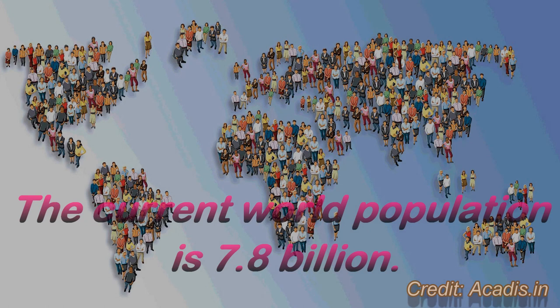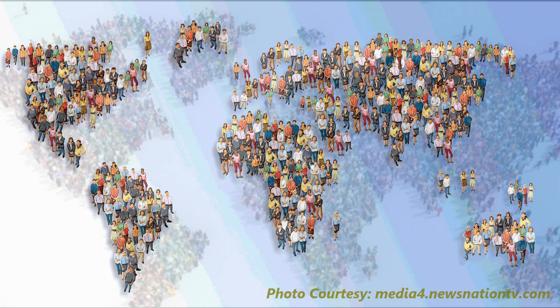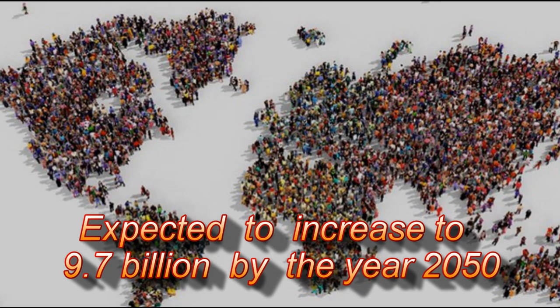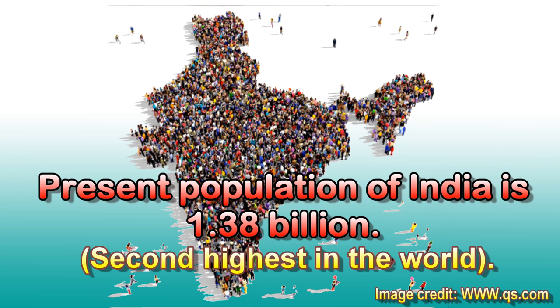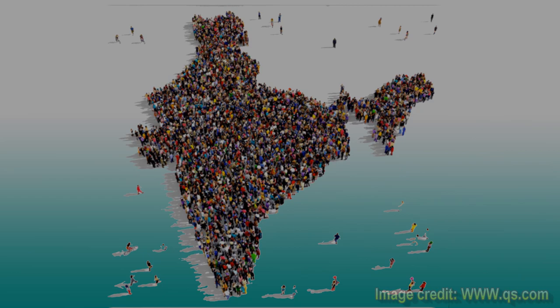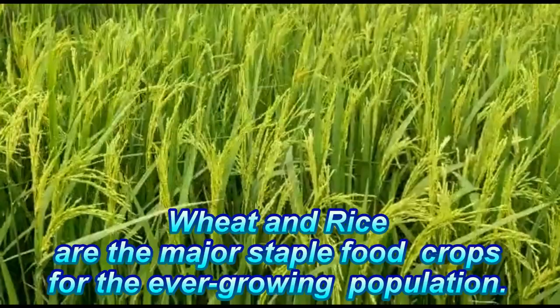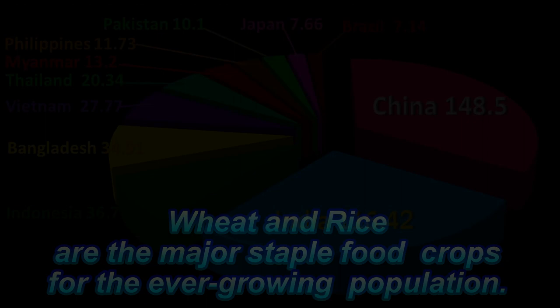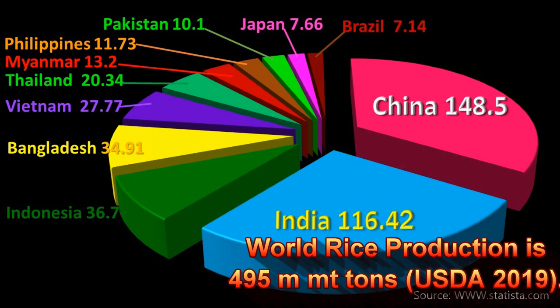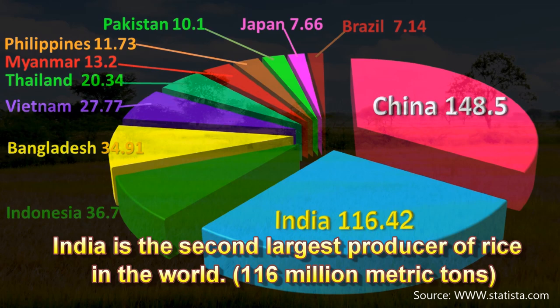The current world population is 7.8 billion, expected to increase to 9.7 billion by the year 2050. The present population of India is 1.38 billion, the second highest in the world. Wheat and rice are the major staple food crops for the ever-growing population. World rice production is 495 million metric tons, and India is the second largest producer of rice in the world at 116 million metric tons.